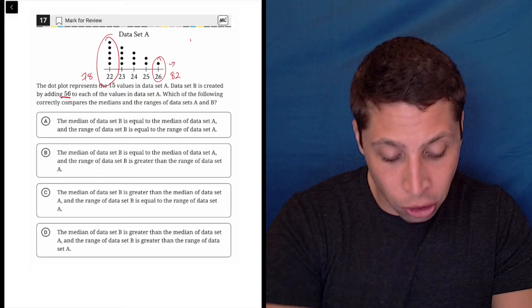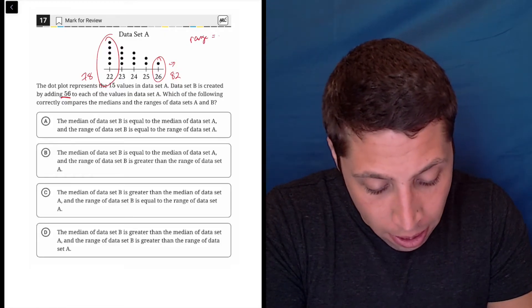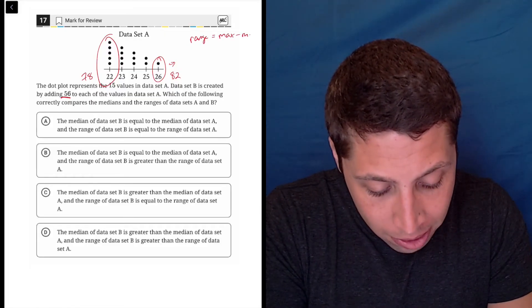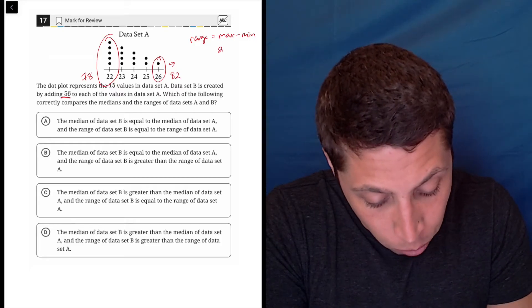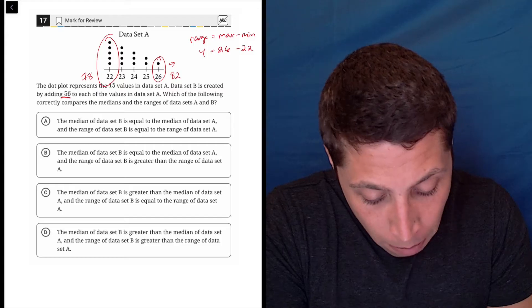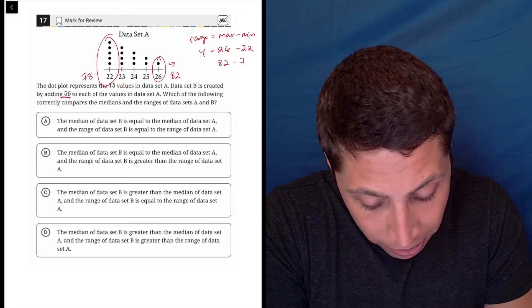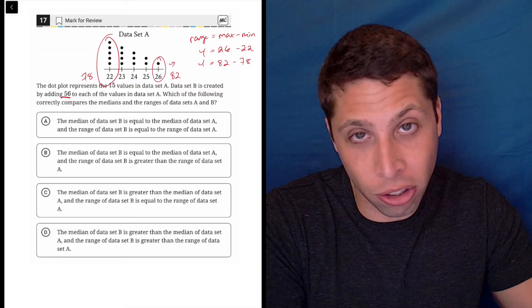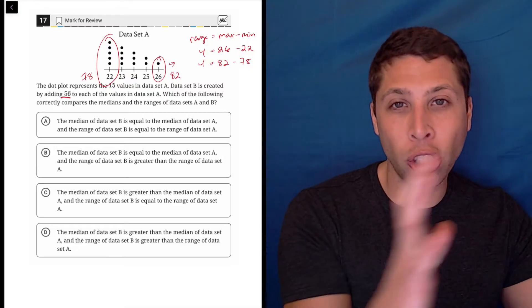And since range is given by the maximum minus the minimum, right, what was our original? Our original was 26 minus 22, so that's a range of 4. But our new is 82 minus 78. That's also a range of 4. So the ranges are going to stay consistent because everything is shifting.